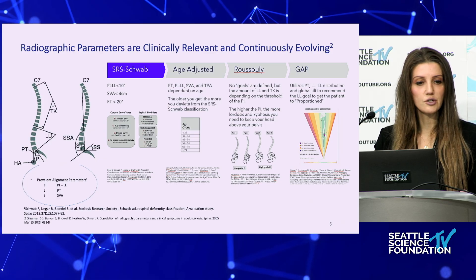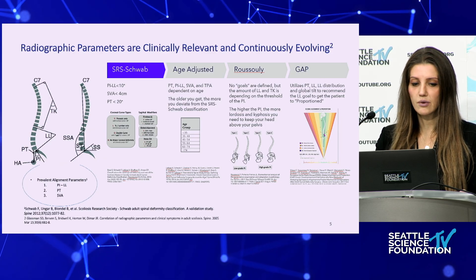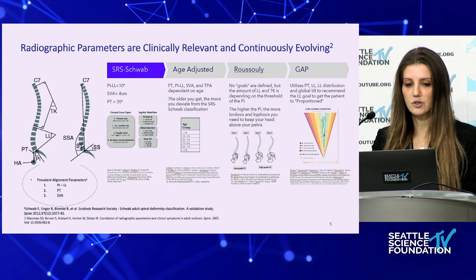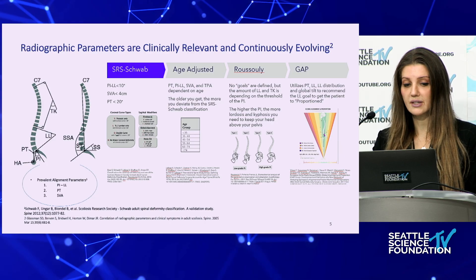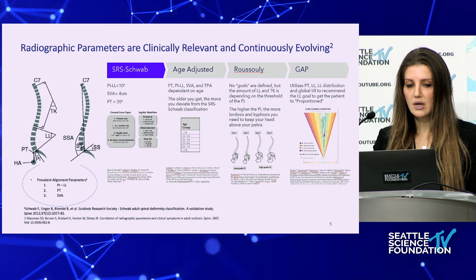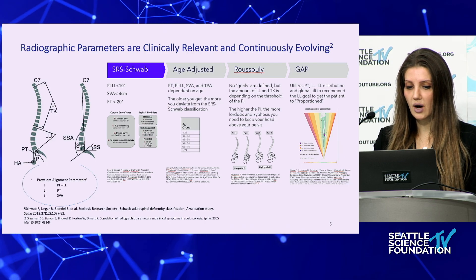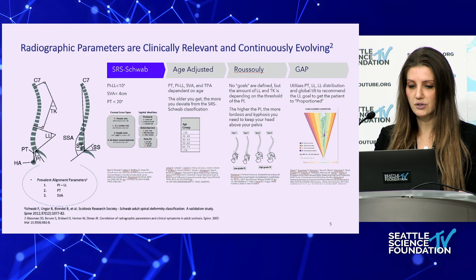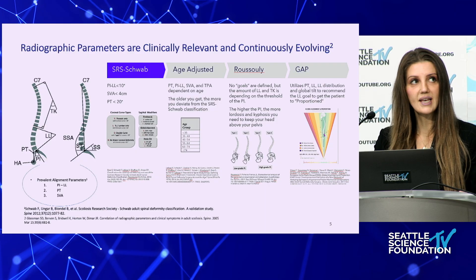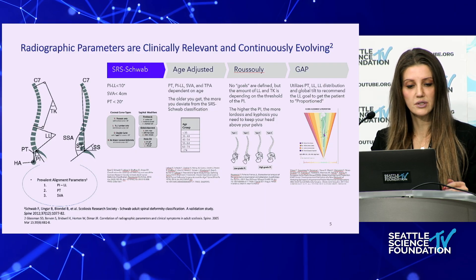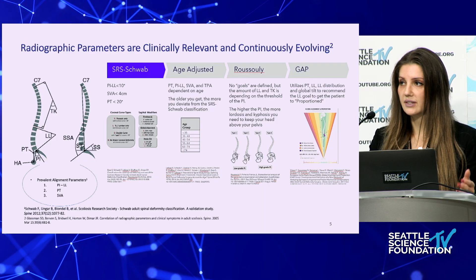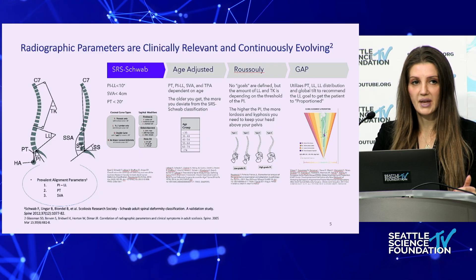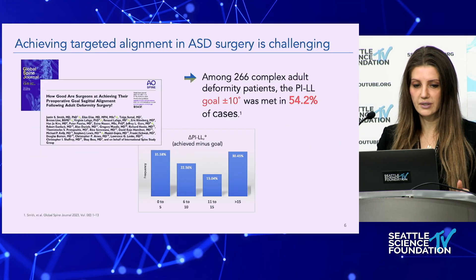We've had multiple iterations of describing sagittal parameters in spine surgery, initially starting with SDRS Schwab and then proceeding through GAP, Roussoli, and other classifications. The key thing is that the more patients are corrected to their optimal alignment, the better their function will be after surgery and the lower the revision rates.